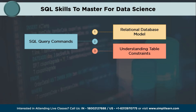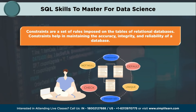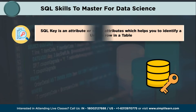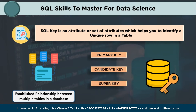Next, having a good knowledge of table constraints. Constraints are a set of rules imposed on the tables of relational databases, which help maintain accuracy, integrity, and reliability. We have different types of constraints, for example, not null, foreign key, default, unique, primary key, and check. These constraints improve query performance by creating an index on a column or set of columns. Understanding and utilizing these constraints appropriately helps maintain data consistency and improve the reliability of database operations. Also, you need a good knowledge of SQL key constraints. SQL keys are attributes or sets of attributes which help identify a unique row in a table. SQL keys establish relationships between multiple tables in our databases. Having a good knowledge of keys like primary key, candidate key, super key, and foreign key is a must for a data scientist.